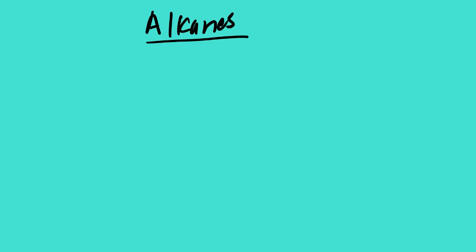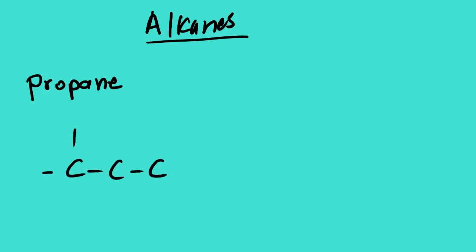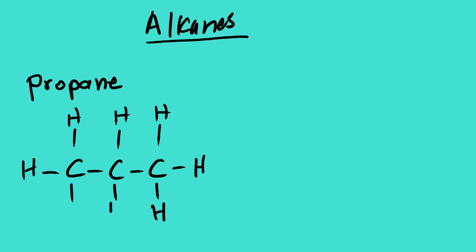Our next compound is propane, which consists of three carbons. It has single bonds between the carbons and then we have hydrogens. Looking at the molecular formula, we have three carbons: C3. Counting the hydrogens: one, two, three, four, five, six, seven, eight. So the molecular formula is C3H8.